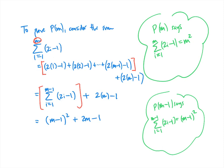Now we just do some algebra. Multiplying out m minus 1 squared gives m squared minus 2m plus 1, plus 2m minus 1. The terms cancel — negative 2m and positive 2m cancel, and positive 1 and negative 1 cancel — leaving just m squared, which was exactly what we wanted to prove.